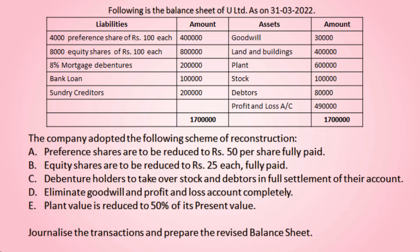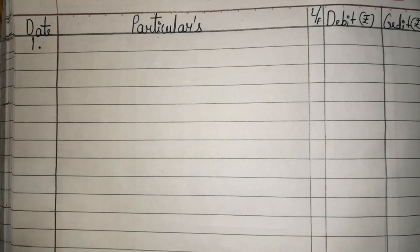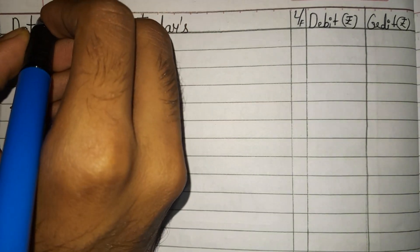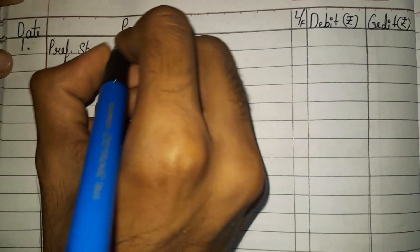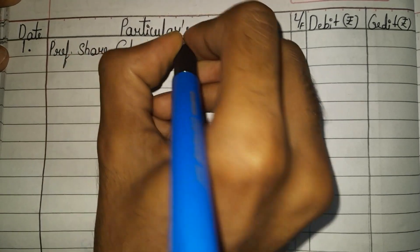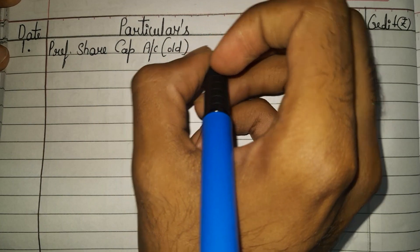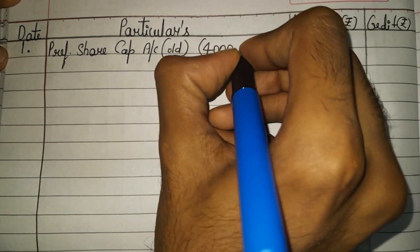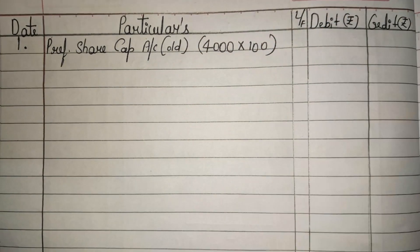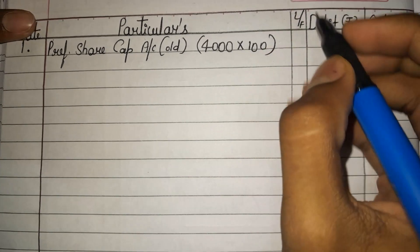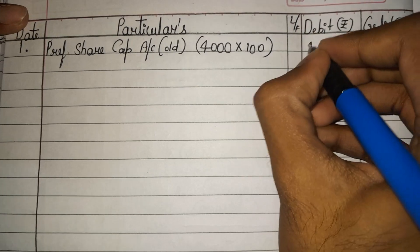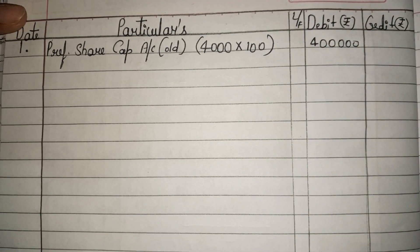We need to journalize the transactions and prepare the revised balance sheet. First, let us pass the journal entry for preference shares since we are reducing their value. Preference share capital account — the old preference share value is 4000 preference shares of rupees 100 each, so 4000 into 100 equals 4 lakh.